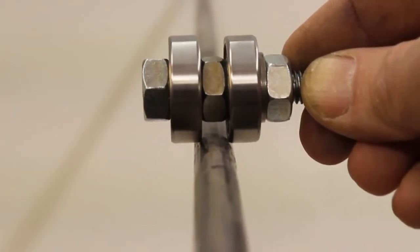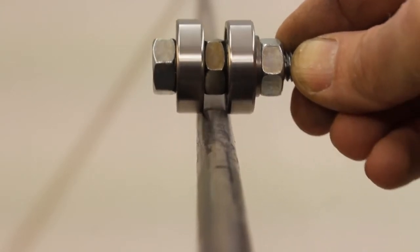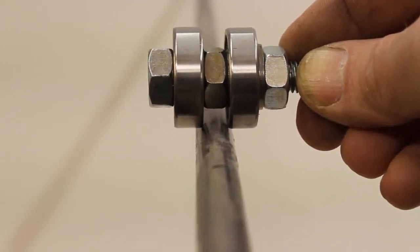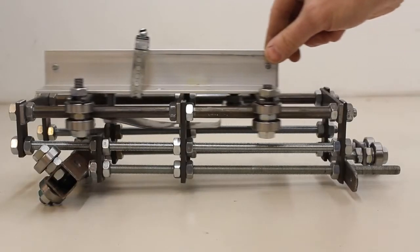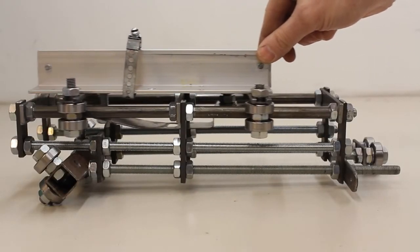The Z axis is guided by ball bearings running on round tubes. The carriage for the Z axis is based on two aluminum angle profiles.